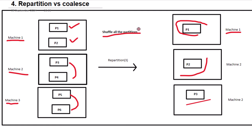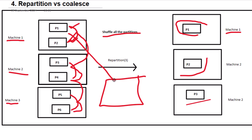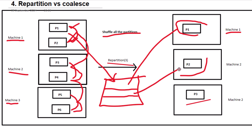Repartition is going to create three partitions — partition one, partition two, and partition three — but it will shuffle all the partitions. What happens behind the scenes: first it shuffles all the data between all partitions, creating a chunk and dumping all data from all partitions into it, then it creates three new partitions. This shuffle is a very costly operation in Spark, especially if you have a large fact table.